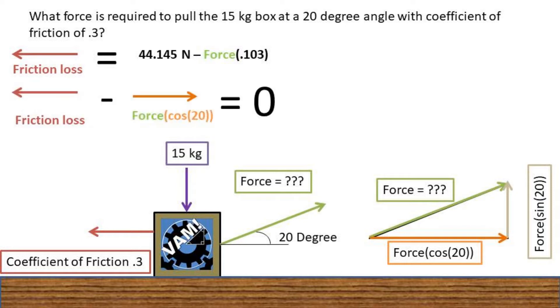In order to get the box to move, the friction loss must be cancelled out by the horizontal or cosine portion of the force vector. So if we take the friction loss minus the force times the cosine of 20 degrees, we get zero.